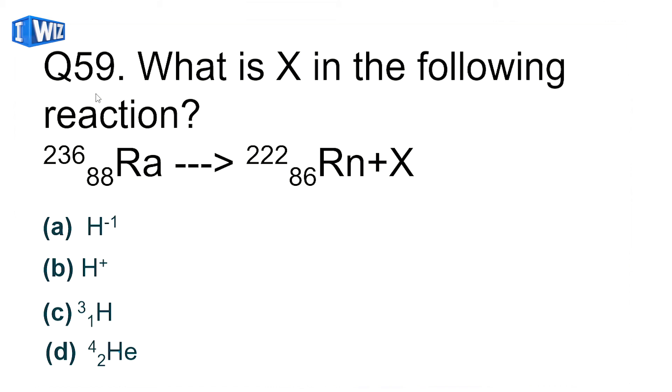What is X in the following reaction? You have radium producing radon, and this particle is released. Radium has atomic number 88 and radon 86, so the particle released has atomic number 2 and mass number 4. This particle is helium, and the fourth option is correct.